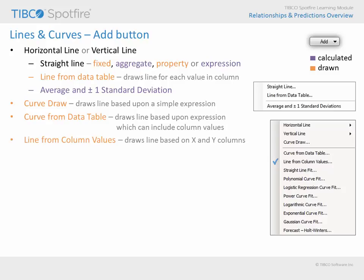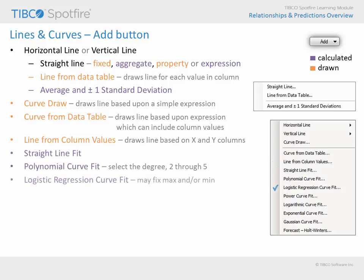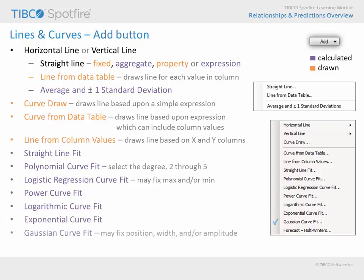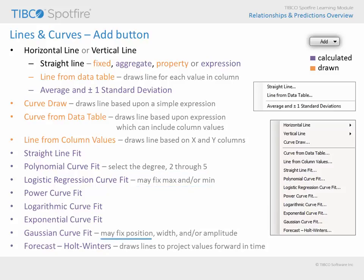Line from column values draws a line based upon X and Y coordinates provided in columns, which may be selected from any data table. The remaining options are Curve Fitting options, which are all calculated based upon the data presented in the visualization. Several of these algorithms allow you to adjust settings or fixed values in order to direct the fit to your data or the projection of future values.